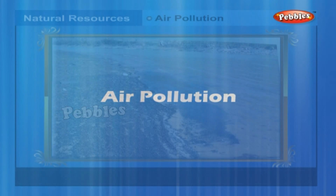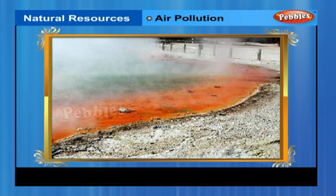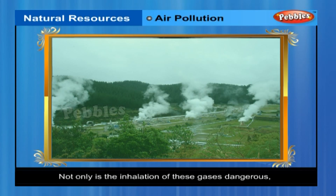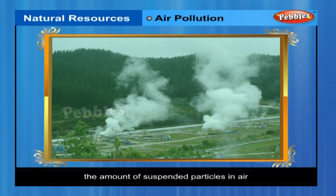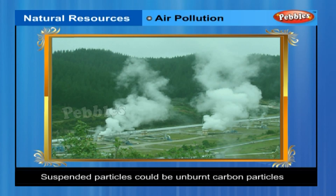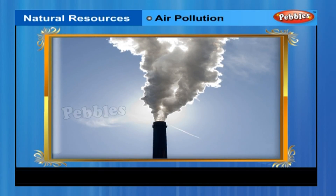Air Pollution. The fossil fuels like coal and petroleum contain small amounts of nitrogen and sulfur. When these fuels are burned, nitrogen and sulfur too are burned, and this produces different oxides of nitrogen and sulfur. Not only is the inhalation of these gases dangerous, they also dissolve in rain to give rise to acid rain. The combustion of fossil fuels also increases the amount of suspended particles in air. These suspended particles could be unburnt carbon particles or substances called hydrocarbons. Presence of high levels of all these pollutants causes visibility to be lowered, especially in cold weather when water also condenses out of air.